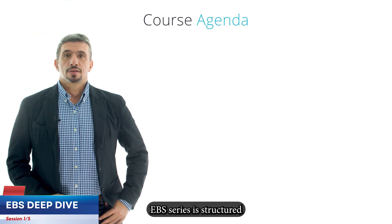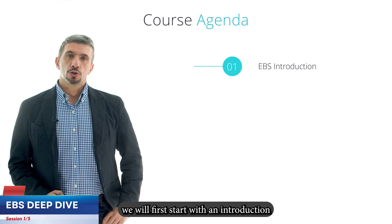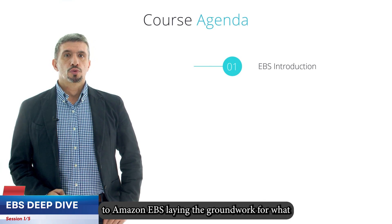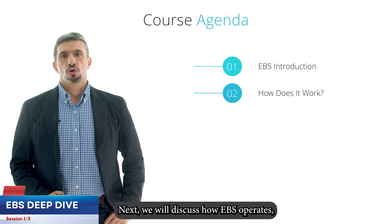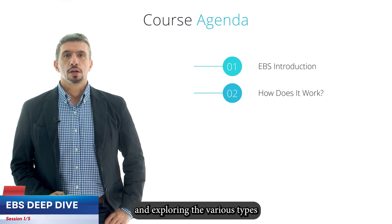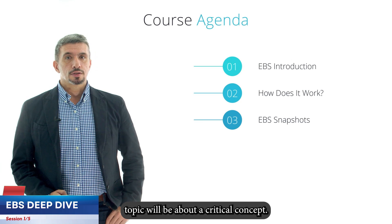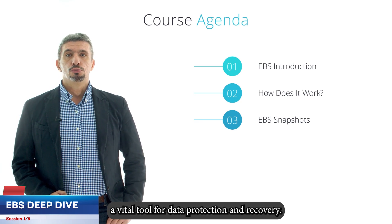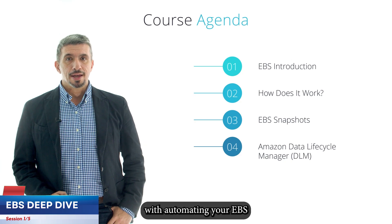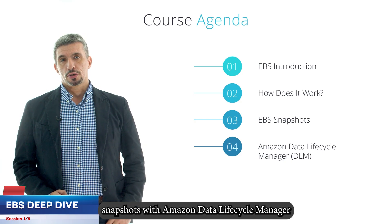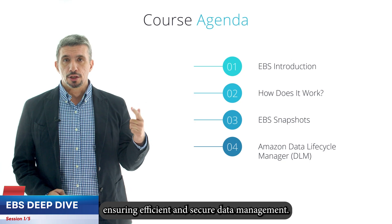Our Amazon EBS series is structured to enhance your understanding step by step. We will first start with an introduction to Amazon EBS, laying the groundwork for what EBS is and its importance in cloud computing. Next, we will discuss how EBS operates, focusing on its features and exploring the various types of EBS volumes available. Our third topic will be about a critical concept — EBS snapshots — a vital tool for data protection and recovery. And finally, we will cap off our series with automating your EBS snapshots with Amazon Data Lifecycle Manager, where we will learn how to streamline and automate your EBS backups and snapshots, ensuring efficient and secure data management.